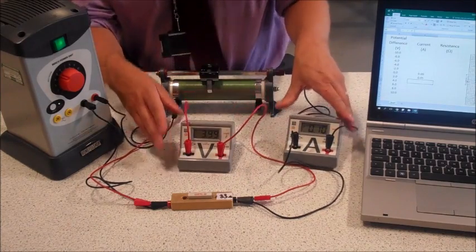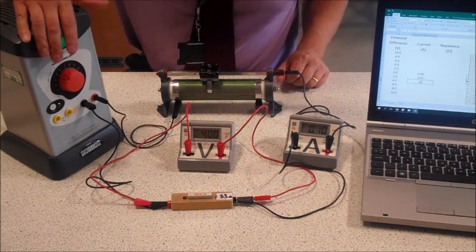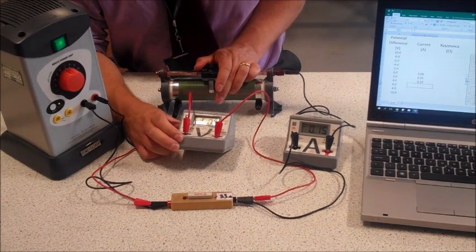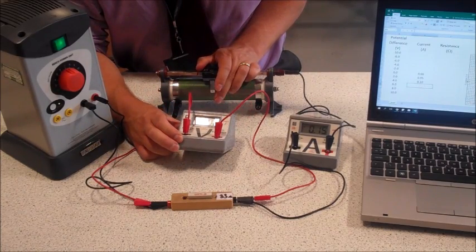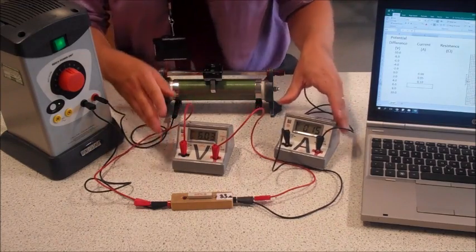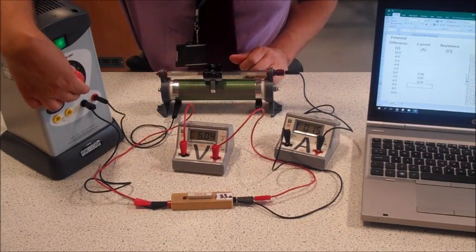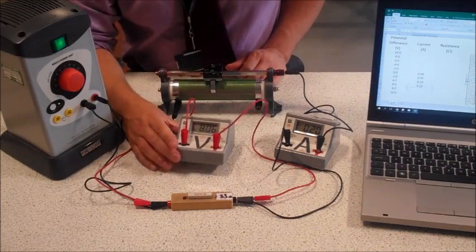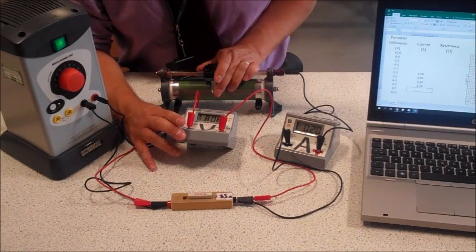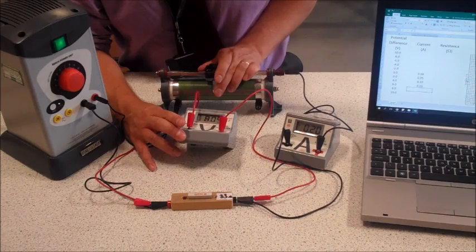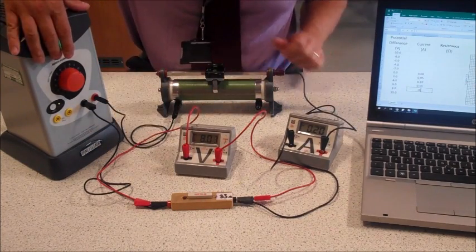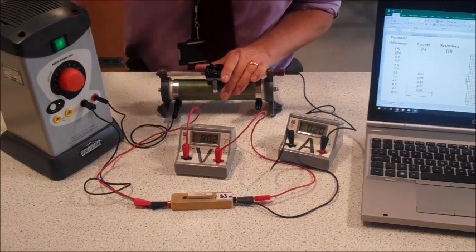And we'll go up again to hopefully six volts. Okay, six volts and we've got 0.15 amps. And then we'll increase the potential difference to about eight volts. The higher we go the harder to get, and we've got 0.20 amps.